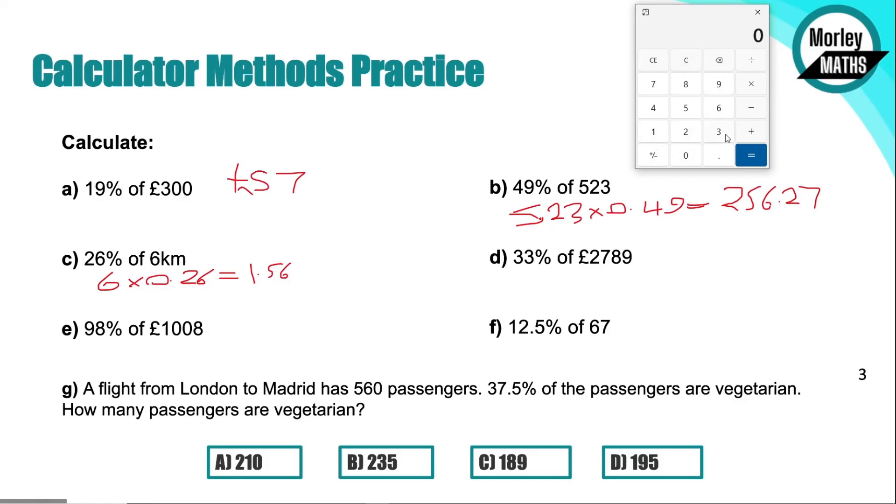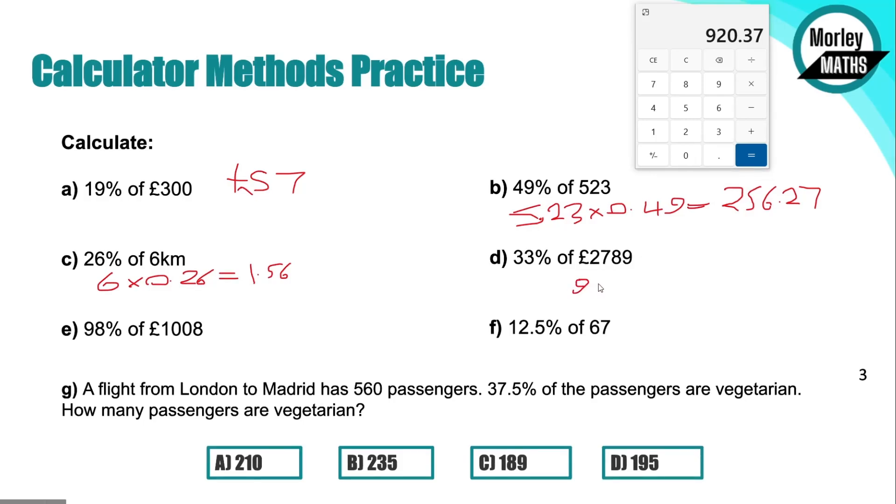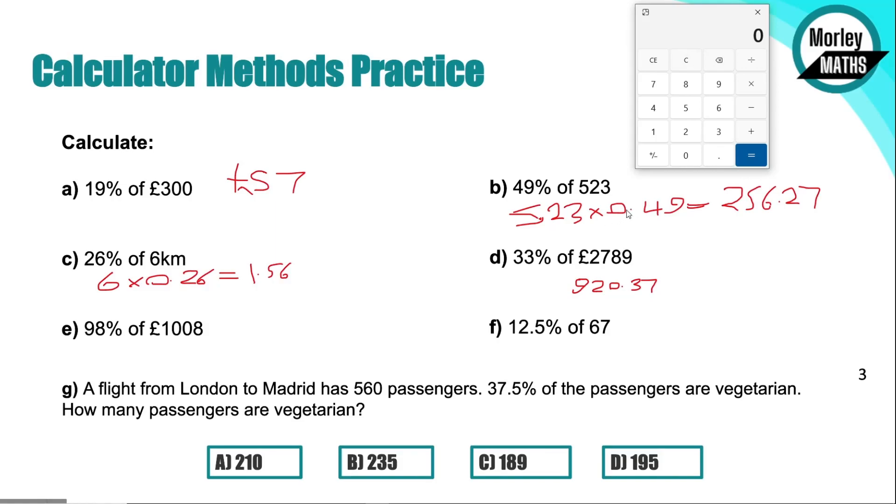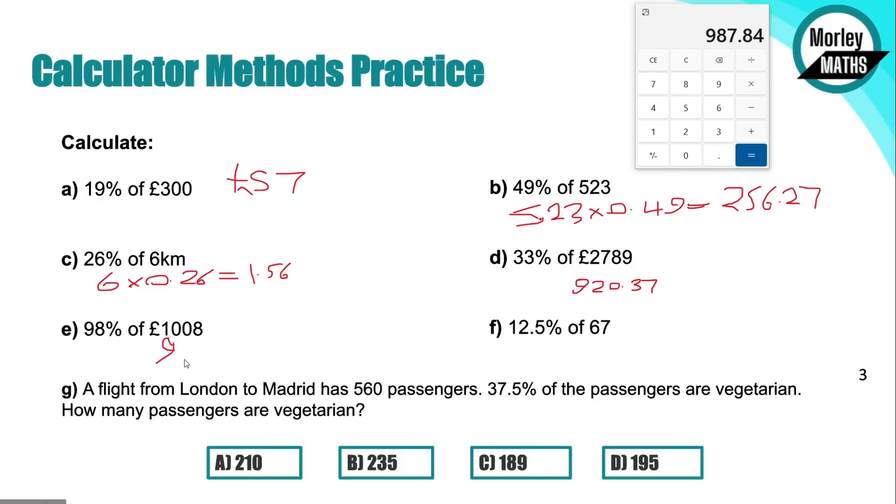If we look at D, we've got 33% of 2789. So 2789 times 0.33 gives us 920 pounds and 37p. Question E, we've got 98% of 1008, so we'll take our total times it by the decimal equivalent of 0.98, which gives us 987 pounds and 84p.